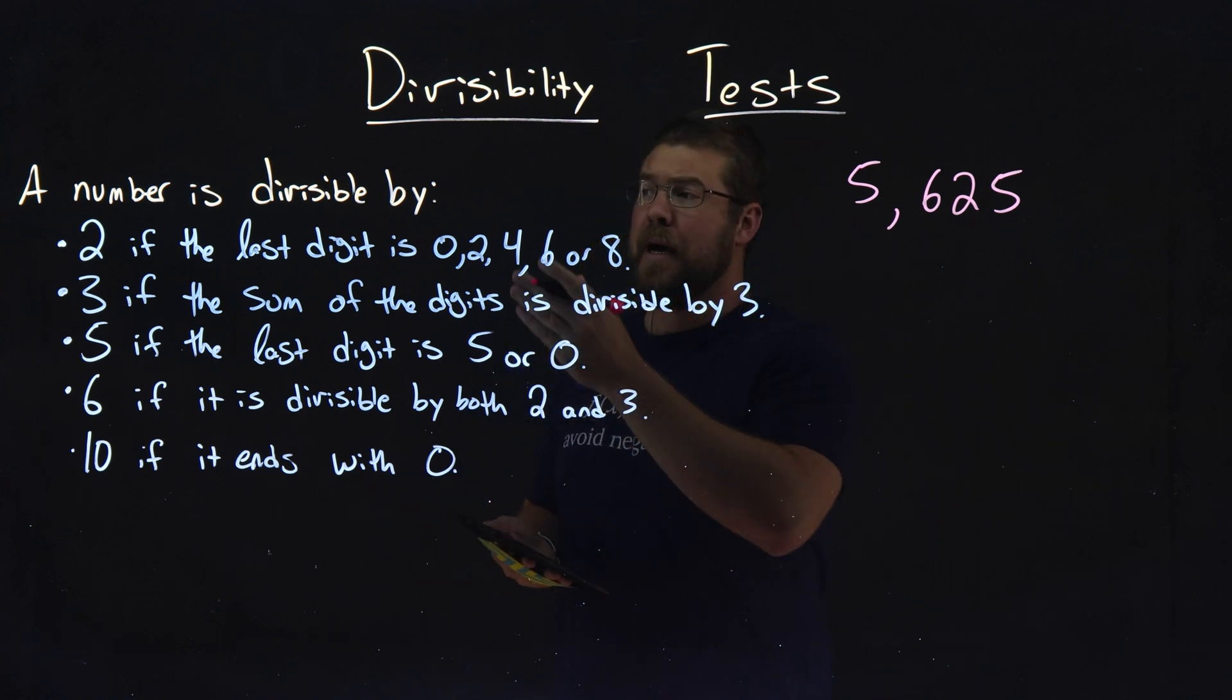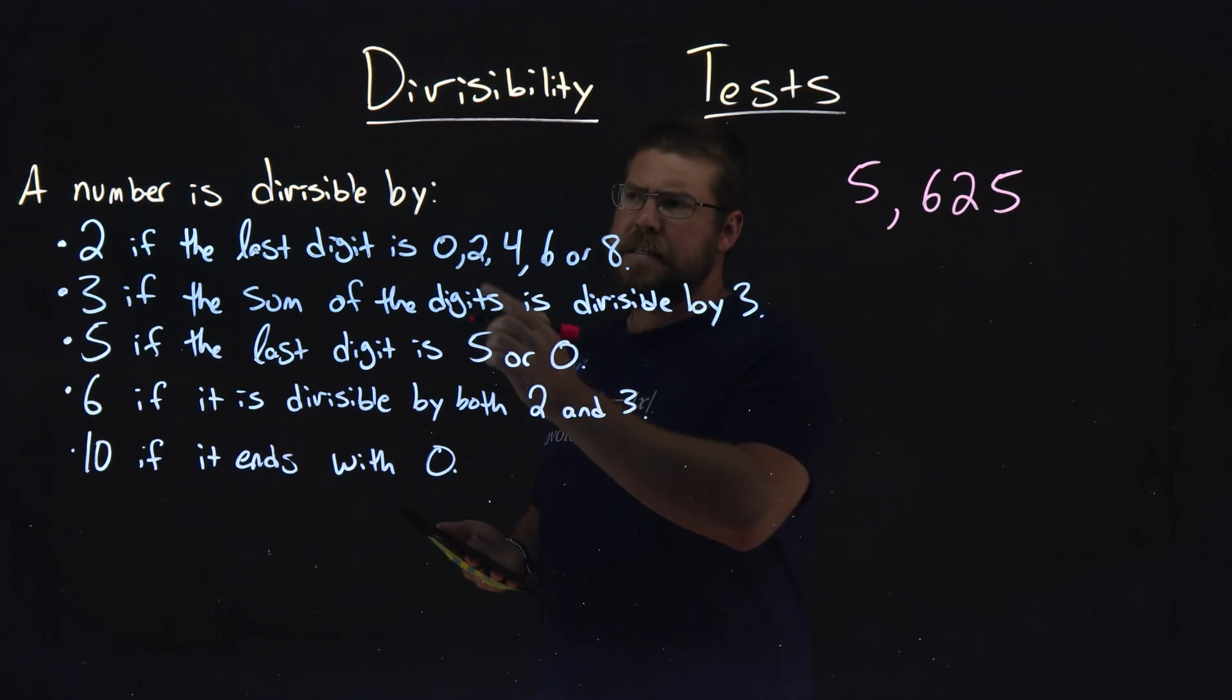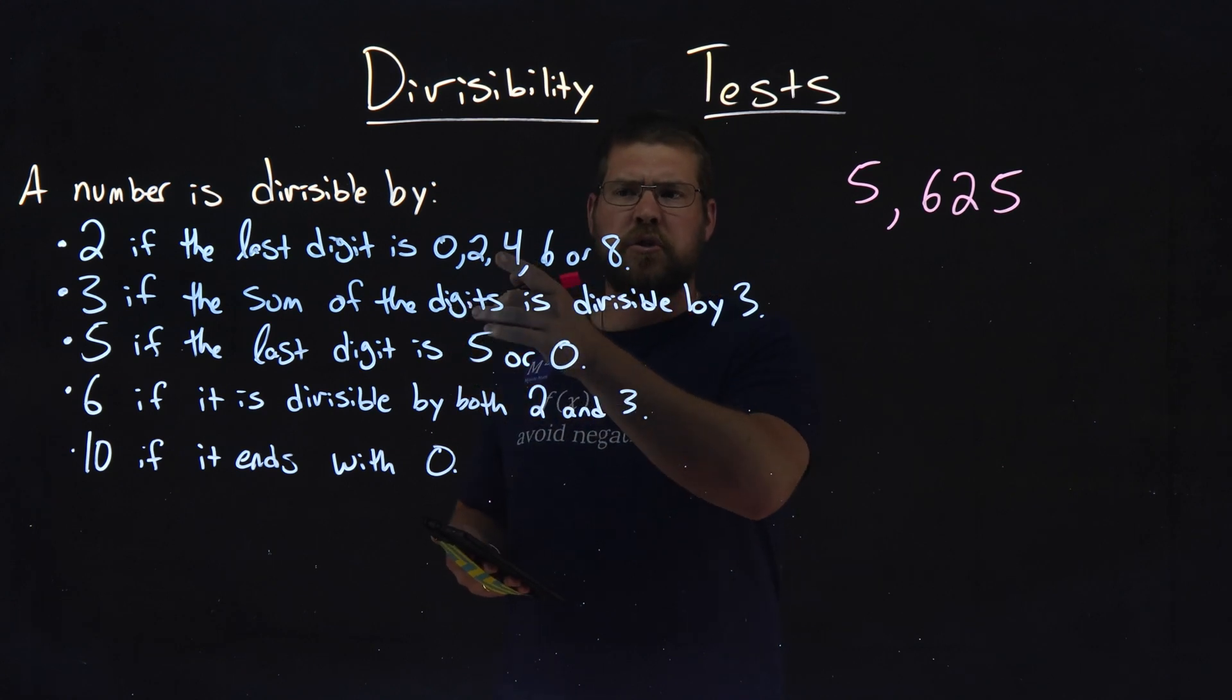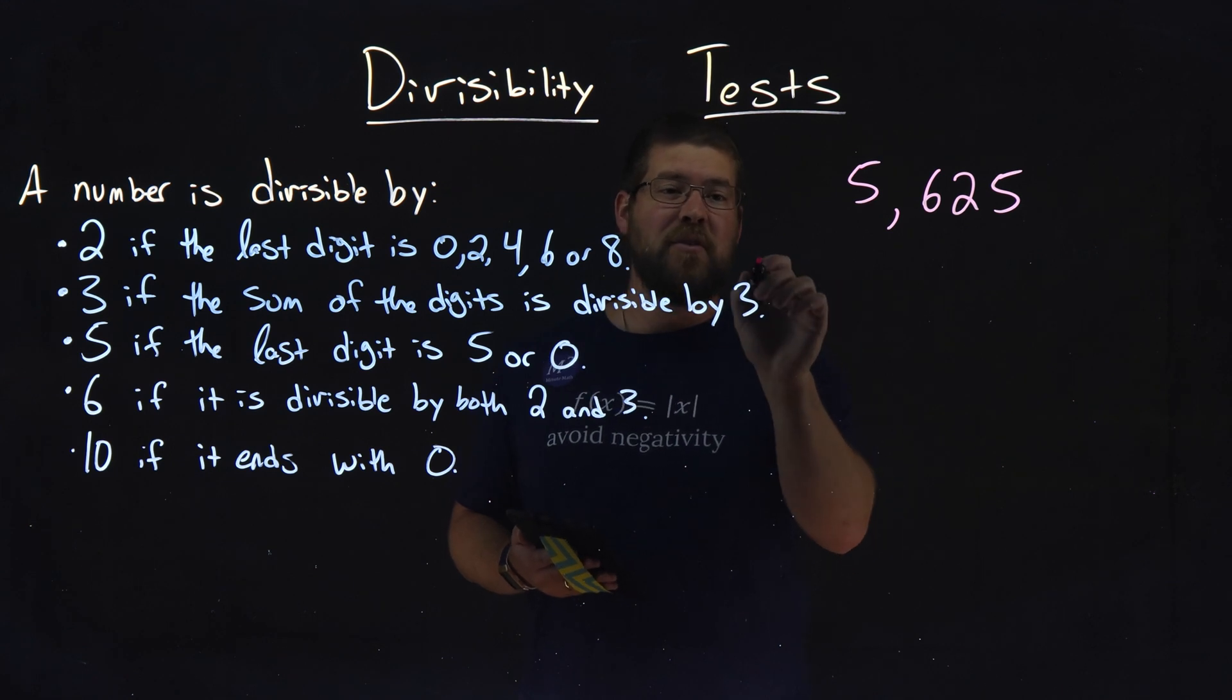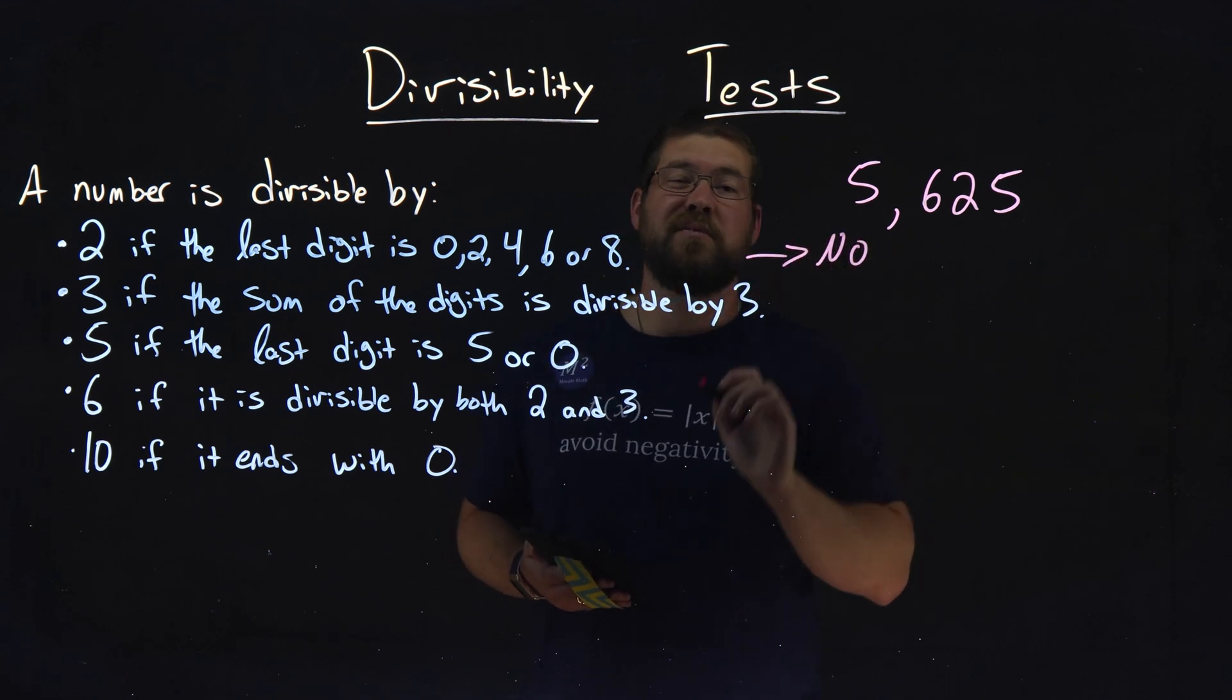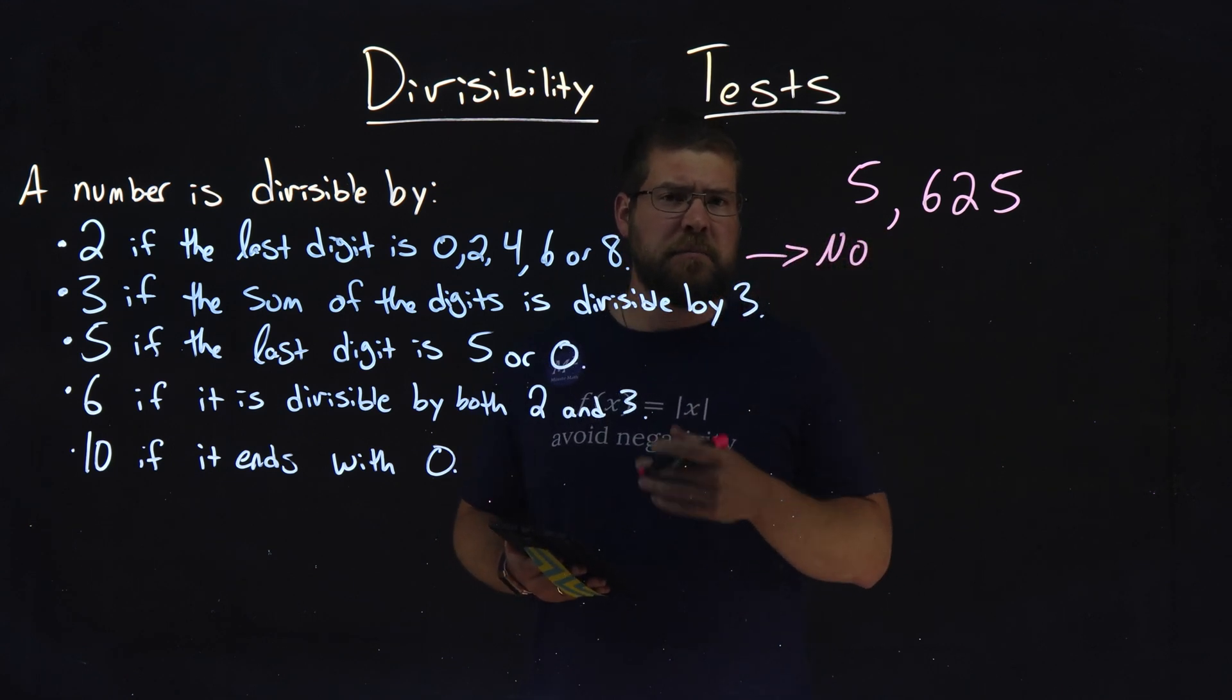Well, is it divisible by 2? Is the last digit 0, 2, 4, 6, or 8? No. The last digit is 5, so the answer is no. It's not divisible by 2. That's okay.